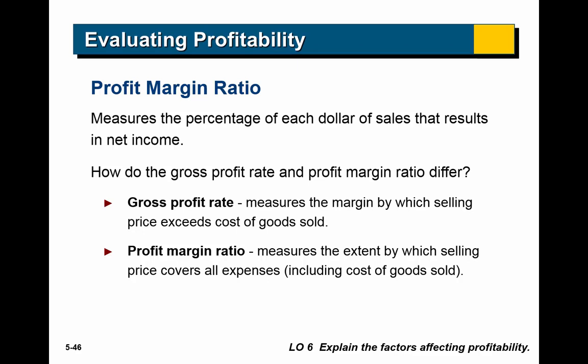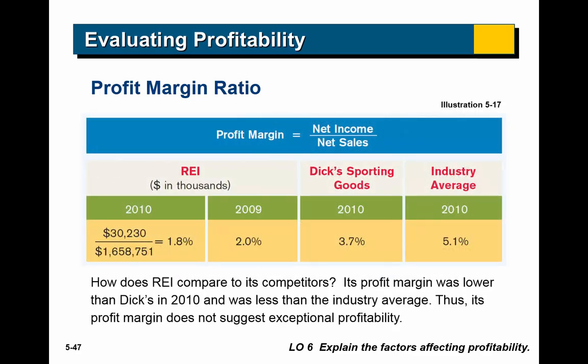The profit margin ratio is similar except we divide net income by net sales. Interestingly, REI actually has a lower profit margin ratio than Dick's Sporting Goods or the industry average — curious, since their cost of goods sold is lower. They must have higher operating expenses that eat into that gross profit advantage.